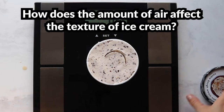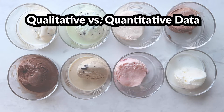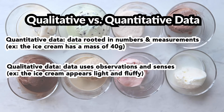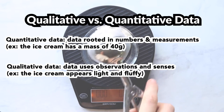So why were we so focused on having measurable data? It's all about the idea of qualitative versus quantitative data. Quantitative data is data rooted in numbers and measurements, like the ice cream has a mass of 40 grams. Whereas qualitative data uses observations and senses, like the ice cream appears light and porous and I can see tiny holes in it. While both have value, the issue with qualitative observations is that they are subjective — what I may consider light, someone else may not. That's why we wanted to use quantitative observations: measurable ones with clear numbers and values. By using a scale, there's not really any room for interpretation on the overall weight of the ice cream.